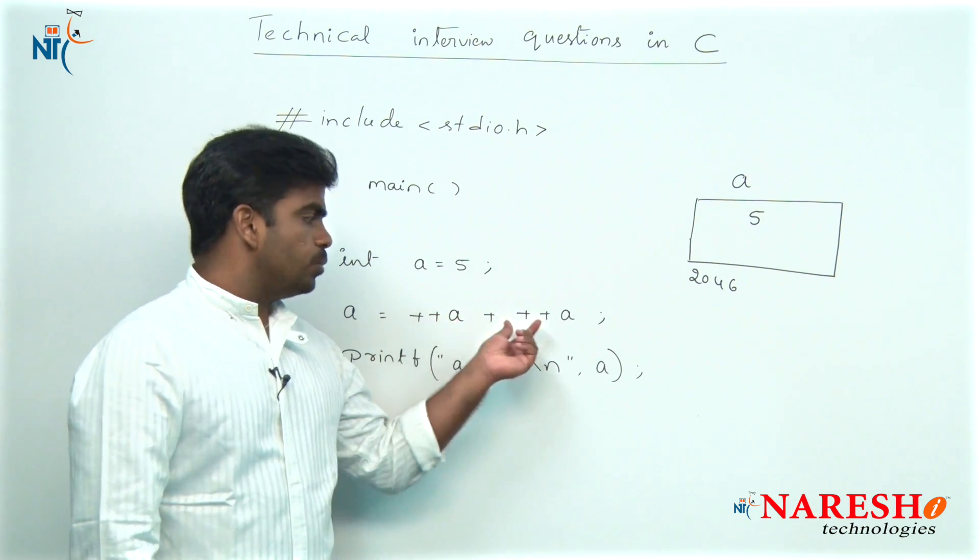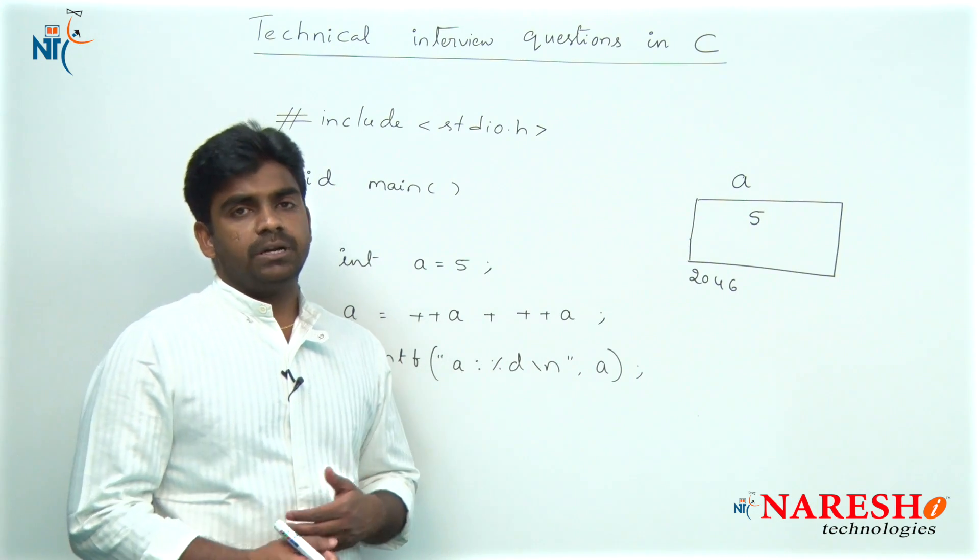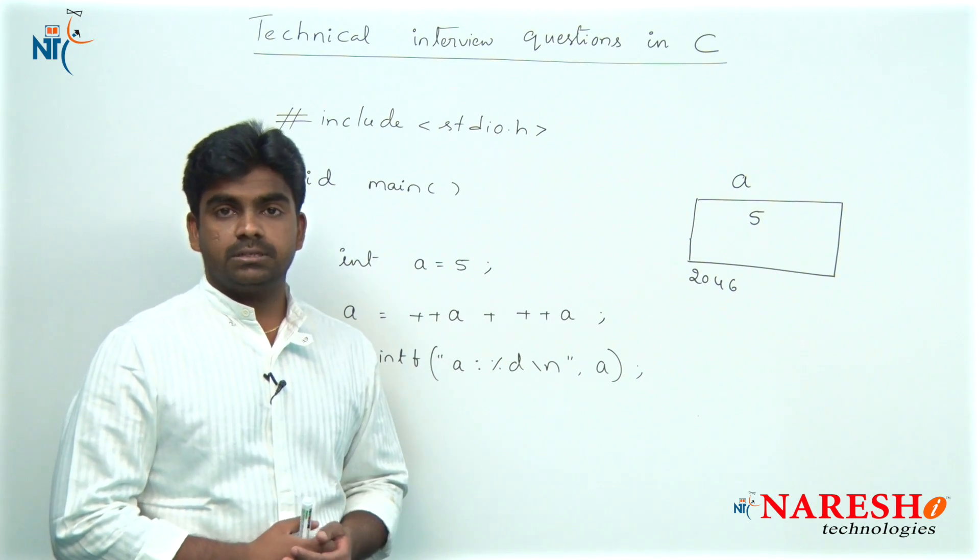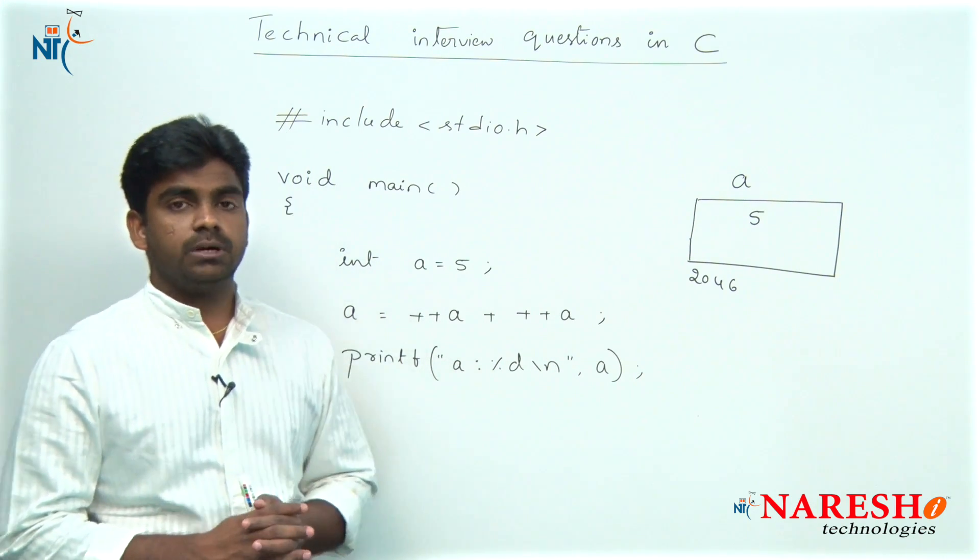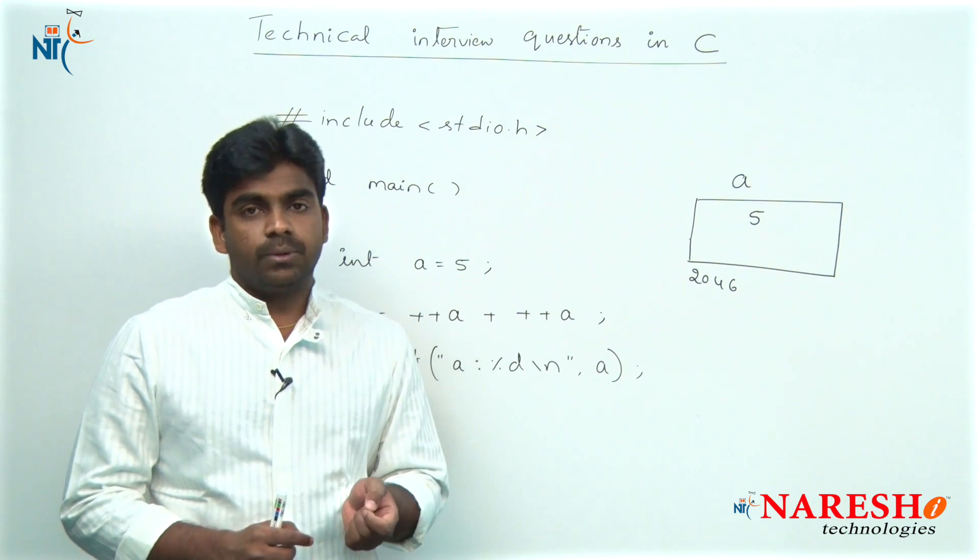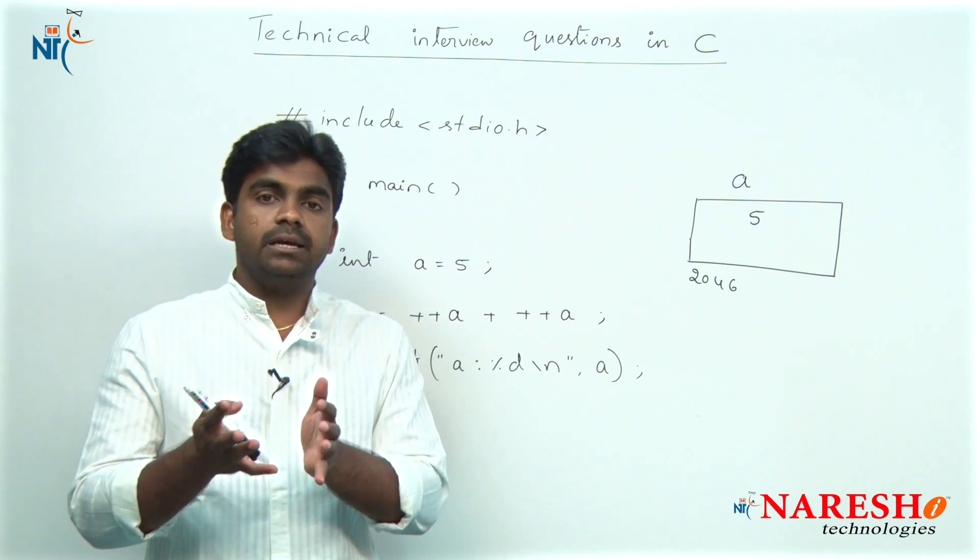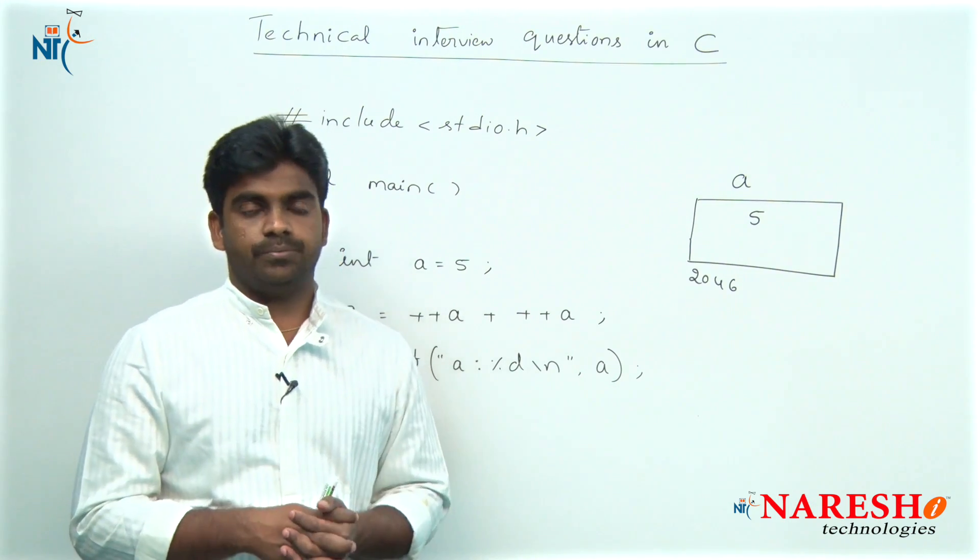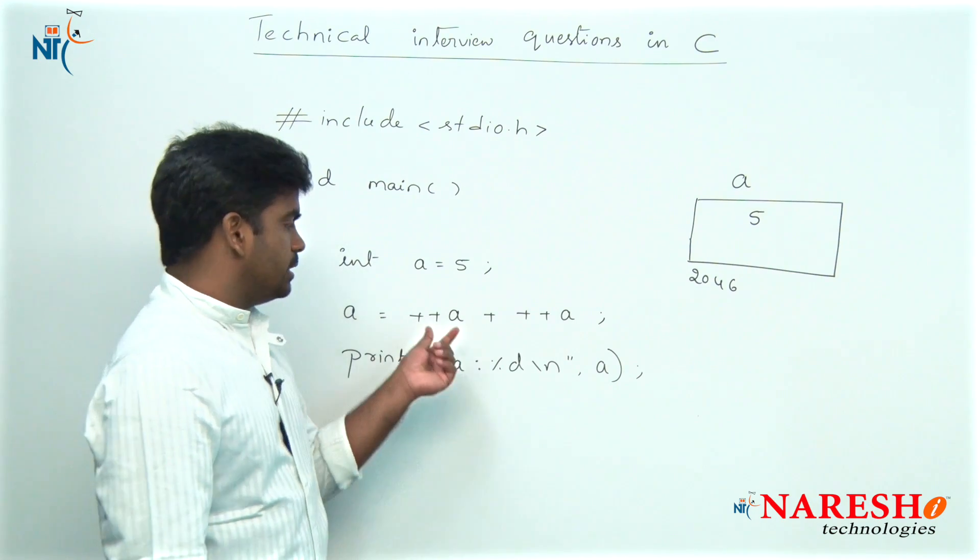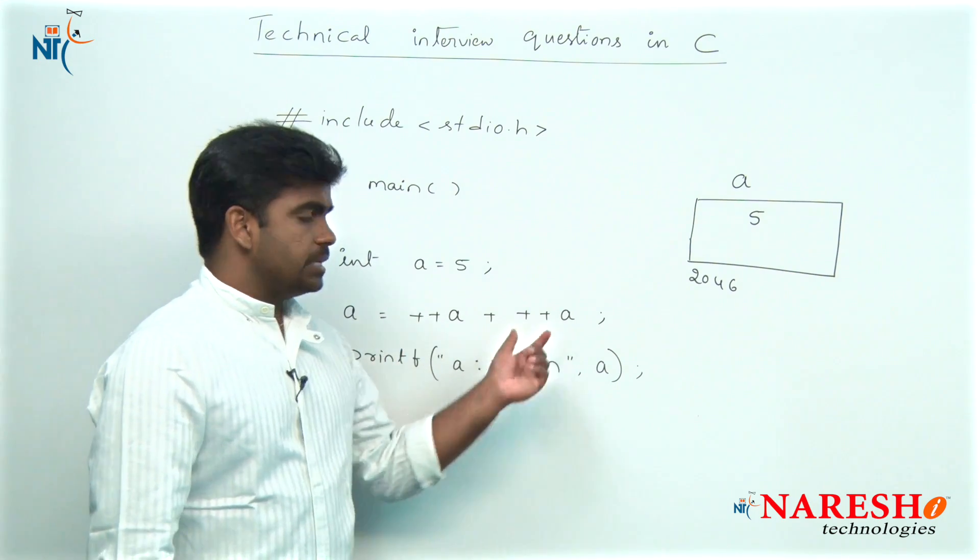How do the pre-increment operators and post-increment operators execute? Pre-increment means what? First increase the value of a variable and then substitute in the expression.